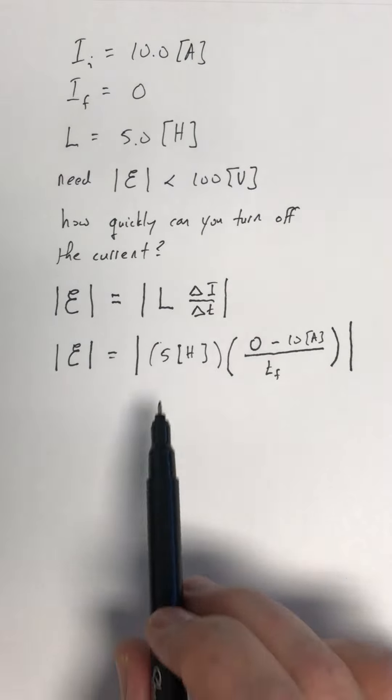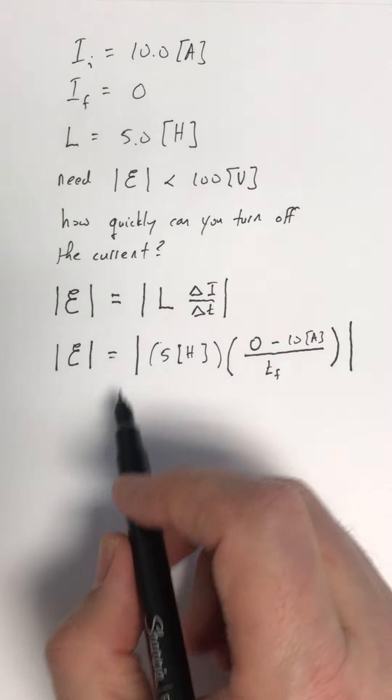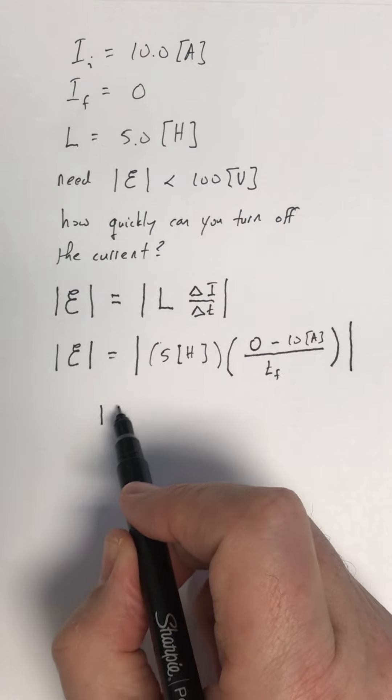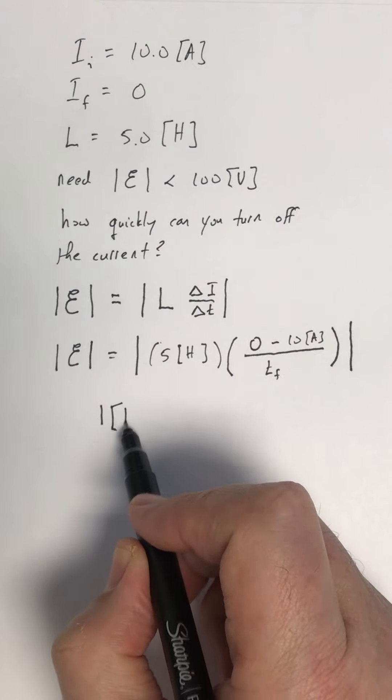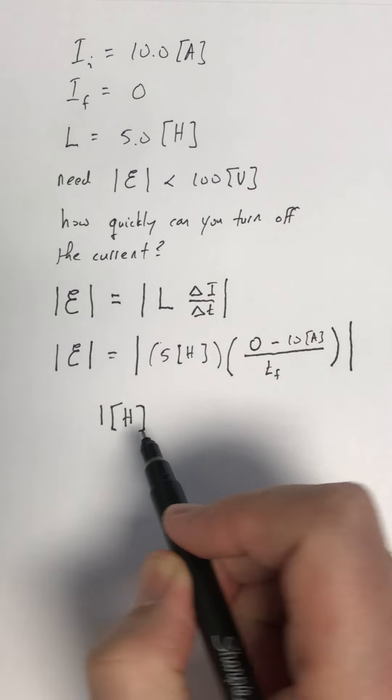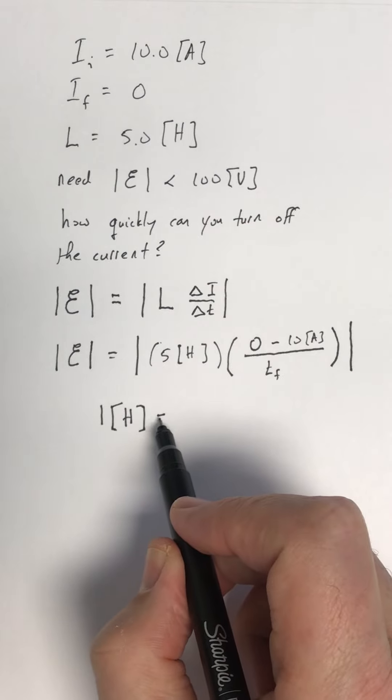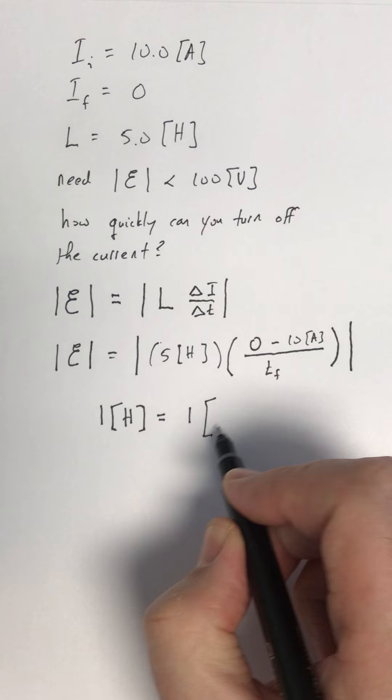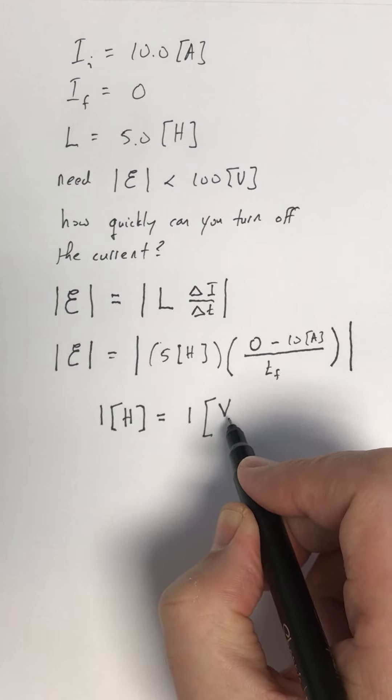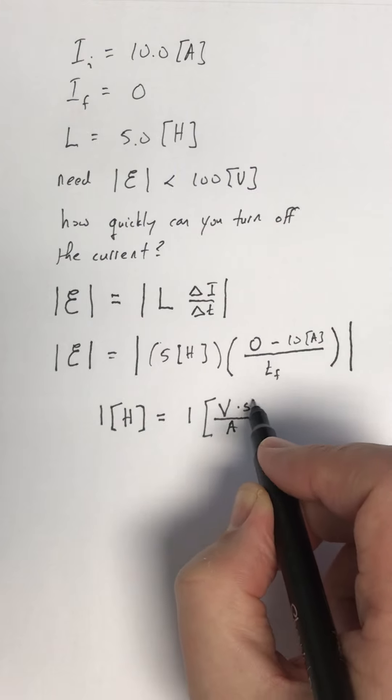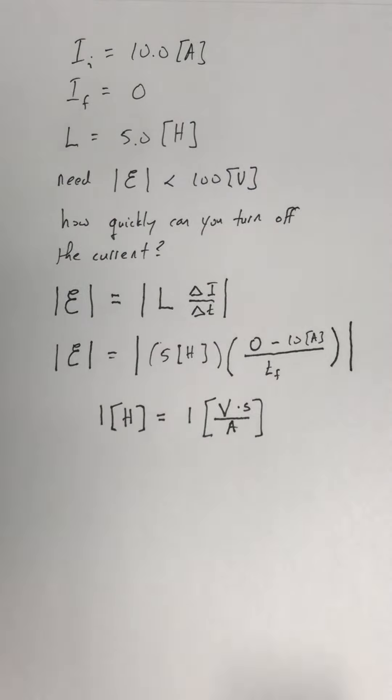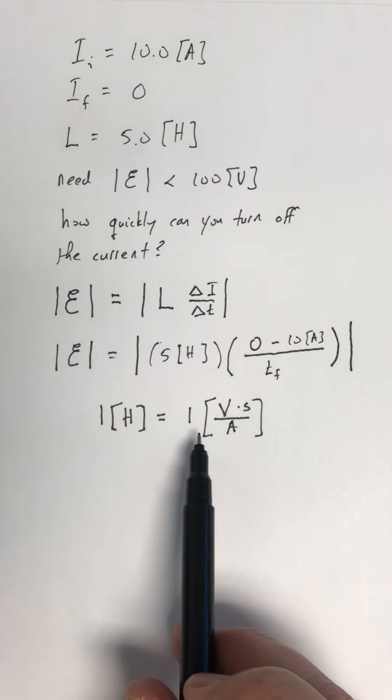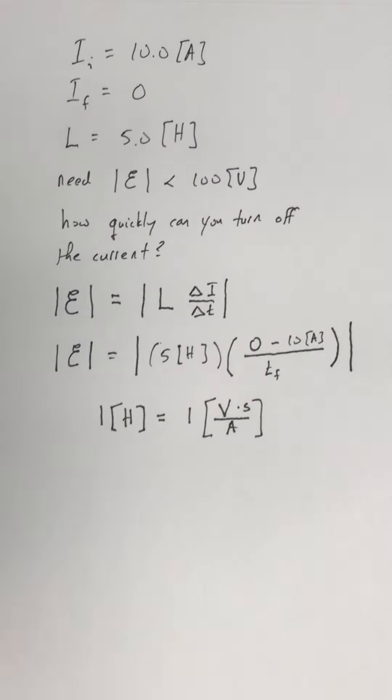A little bit about what this unit of a Henry is. One Henry worth of inductance means one volt of induced EMF for a current changing at a rate of 1 amp per second. So one Henry is one volt second per amp.